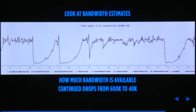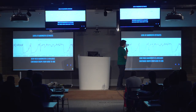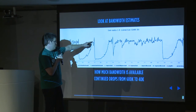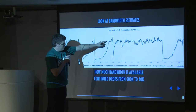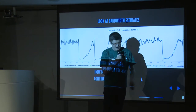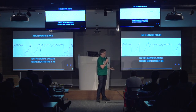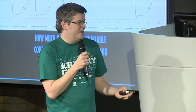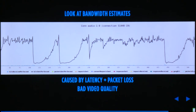Another thing to look at is the bandwidth estimate. In WebRTC, bandwidth between the two peers is continuously estimated. Here we can see the call started well at about 600K, then suddenly dropped to 40K, then ramped back up to 600, stayed there briefly, dropped again — and this pattern of ramp-up then drop repeats multiple times. That behavior is very annoying for users because video quality keeps reducing, and it's caused by latency and packet loss. That call was not a good user experience.